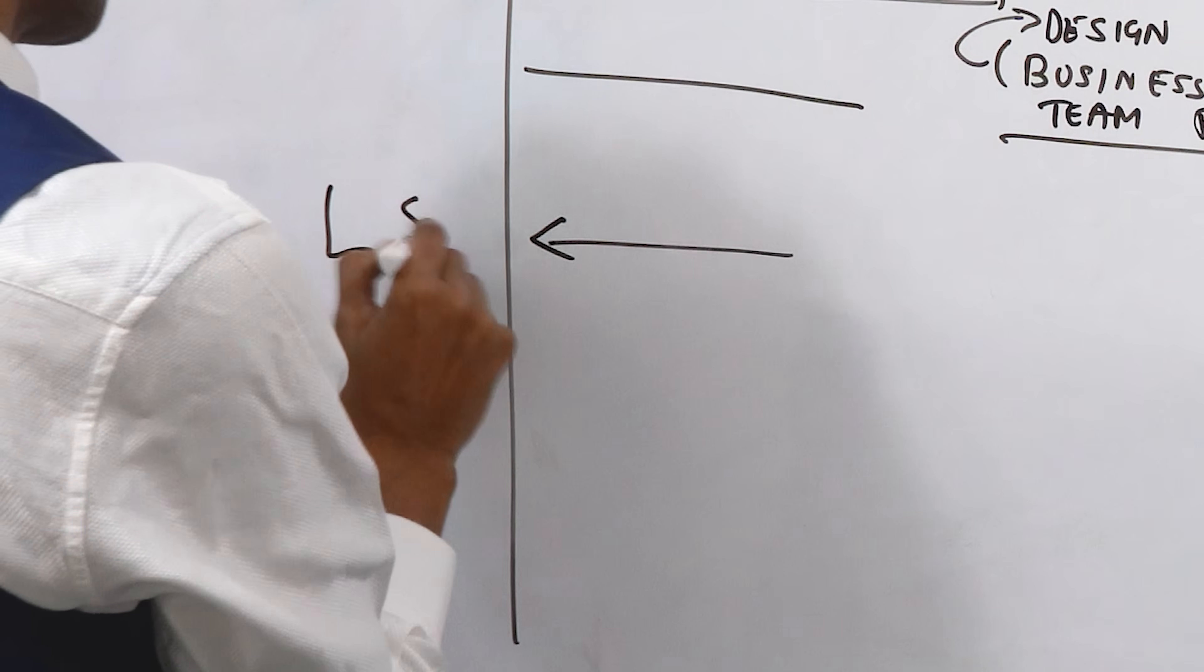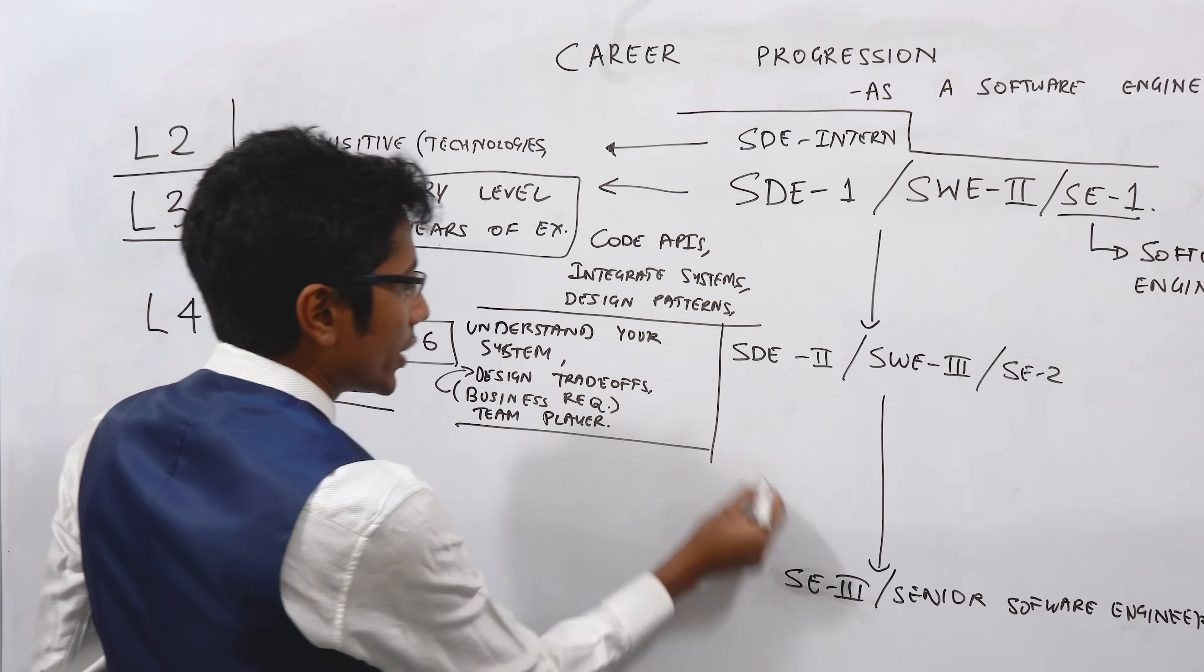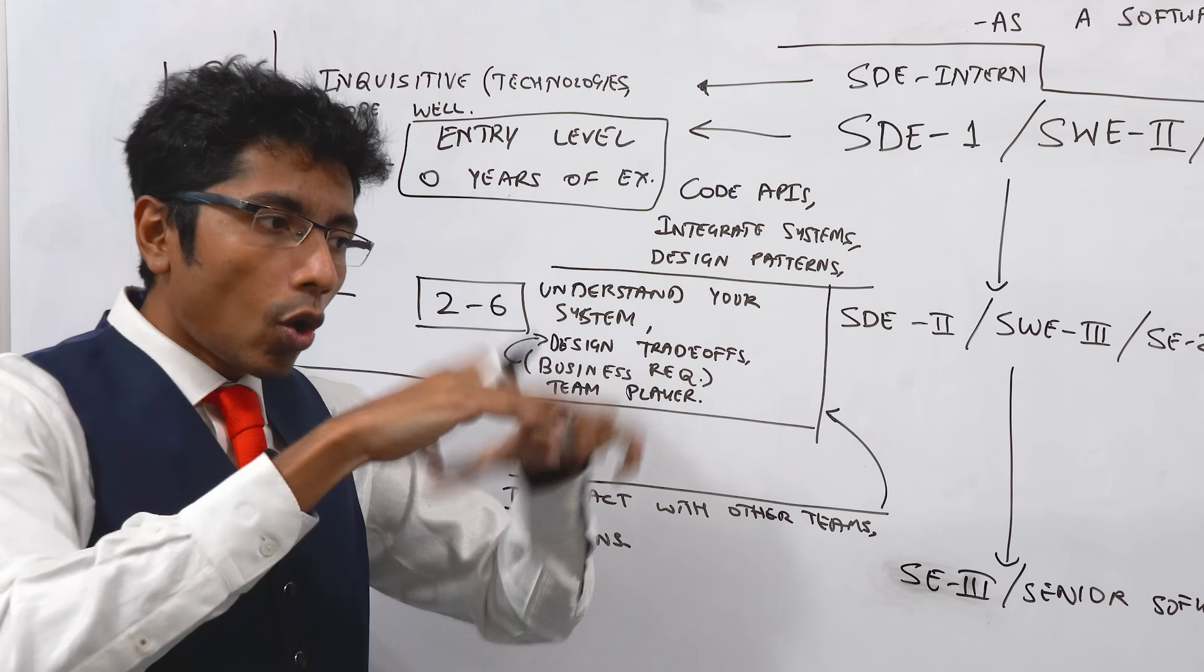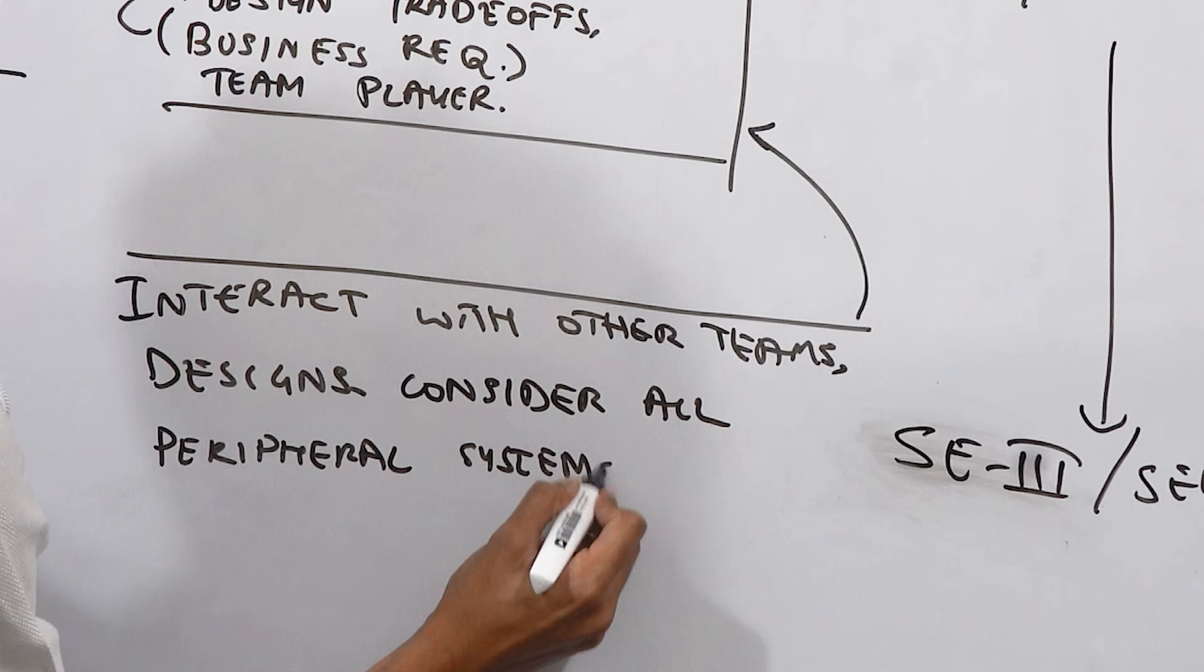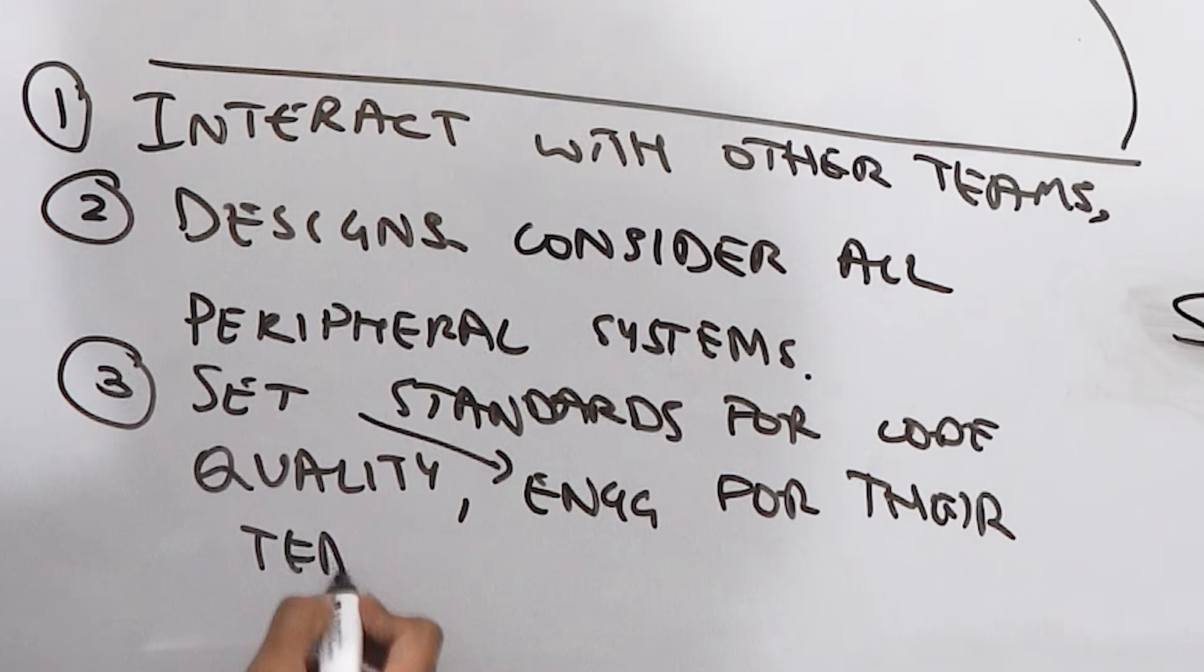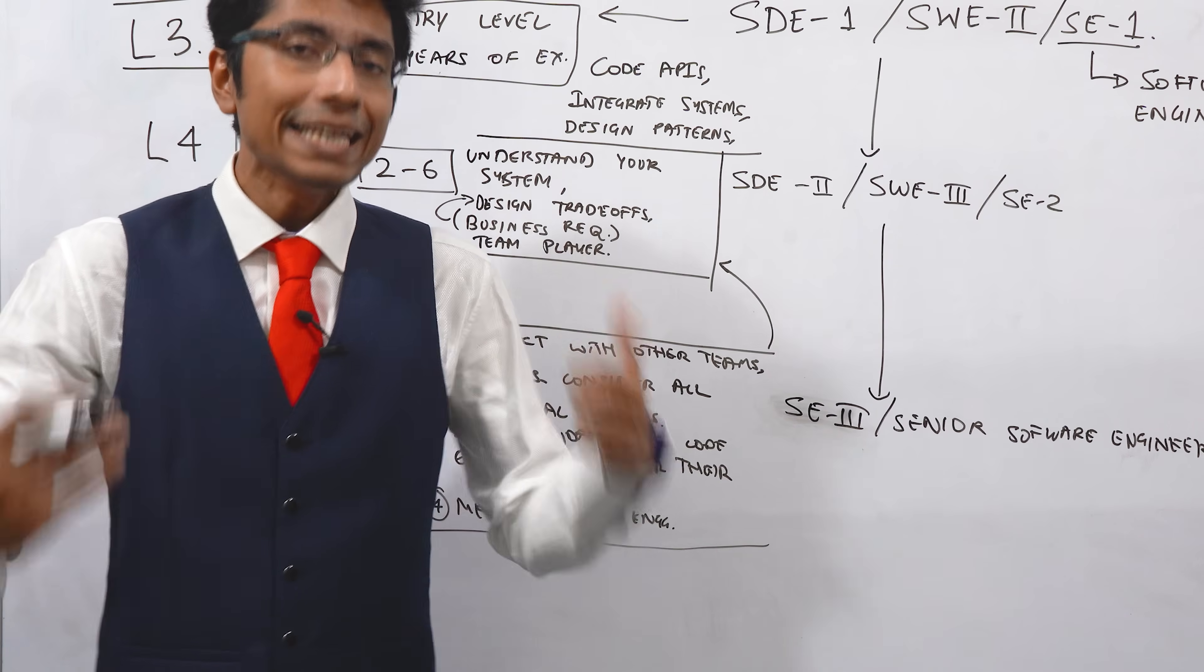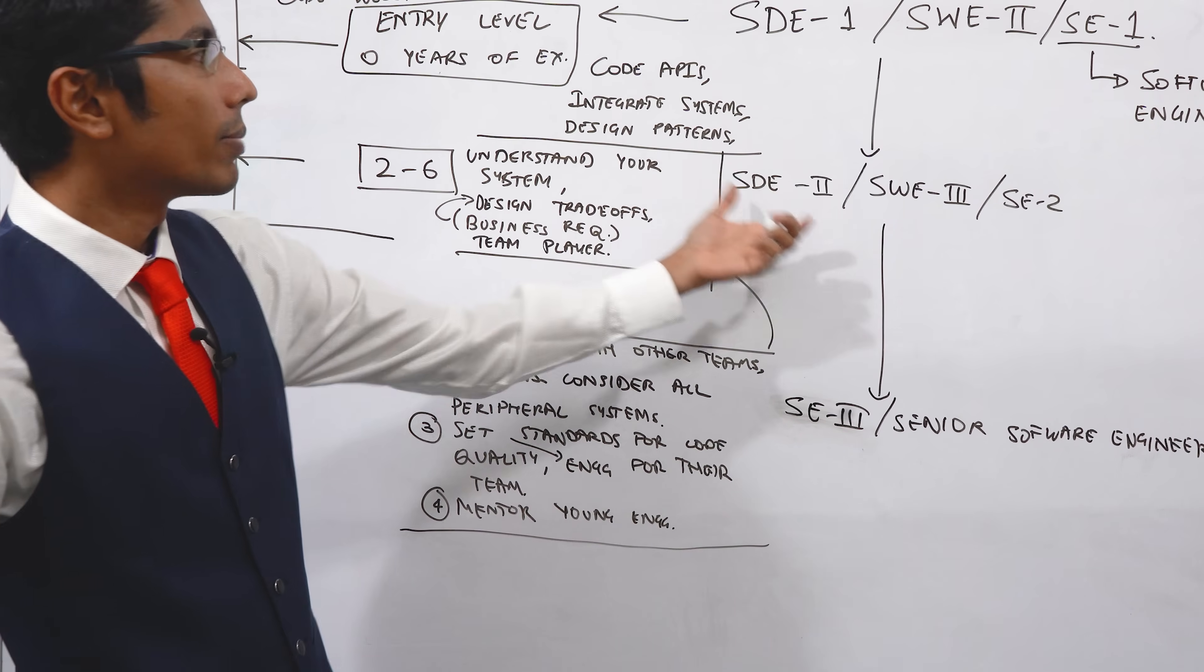L5 is SE3 or senior software engineer, who not just does everything that a SD2 can do, but they interact with other teams. Their designs don't just look into the trade-offs of the current system, but actually think about the overall larger system, everyone they are interacting with and make optimal decisions for them. The third one is they set standards for design and code quality for their team. And the fourth one is they should be able to mentor new joinies or young engineers because different organizations believe different things. Some people believe that by leading the team in the best way, your code quality being extremely high is going to be a good indicator for everybody else to understand.